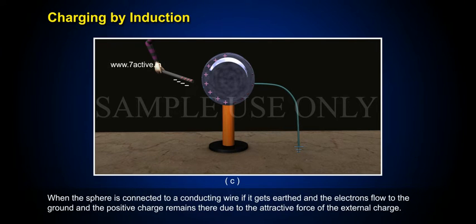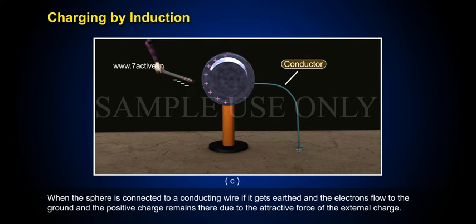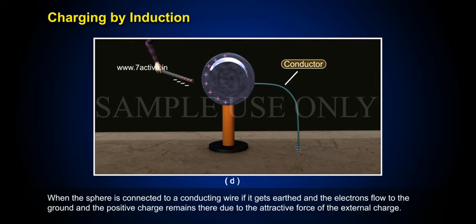When the sphere is connected to a conducting wire, it gets earthed and the electrons flow to the ground, while the positive charge remains there due to the attractive force of the external charge.